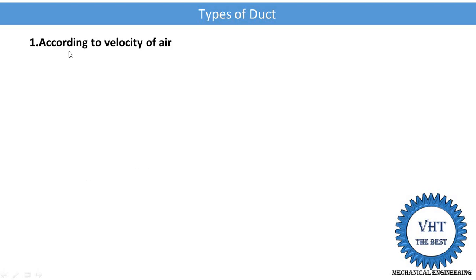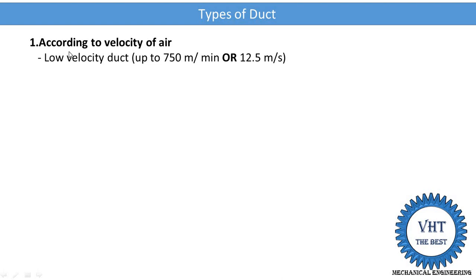The first classification is based on the velocity of the air. On the basis of velocity, it is classified as low velocity and high velocity duct. The low velocity duct is one in which the velocity of the air is up to 750 meters per minute, which is equal to 12.5 meters per second. In the high velocity duct, the velocity of the air is greater than 750 meters per minute, or greater than 12.5 meters per second.